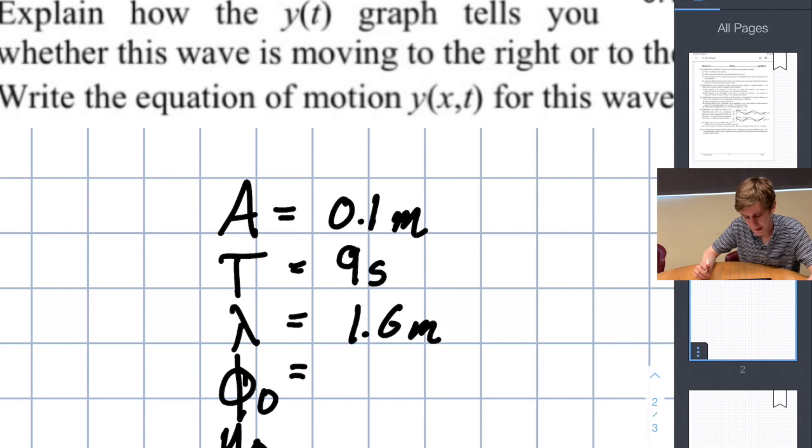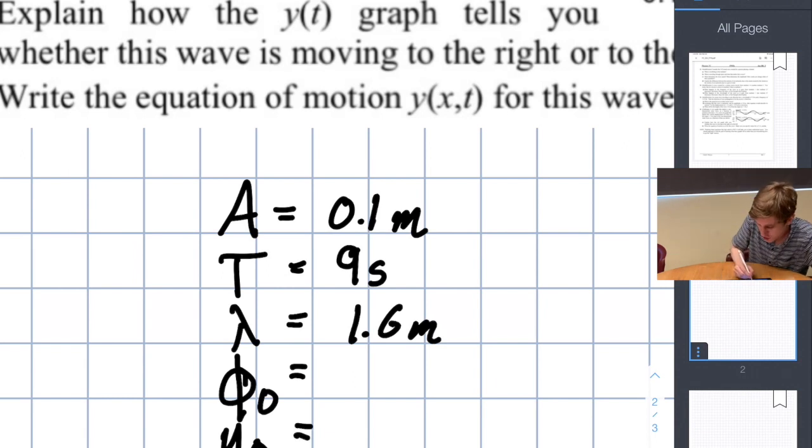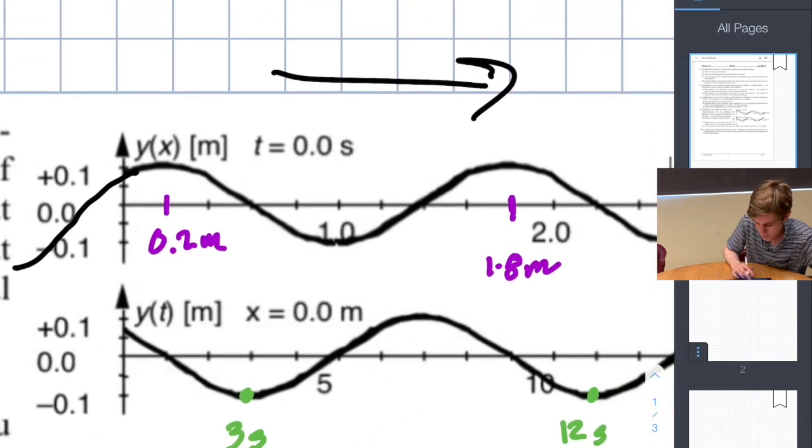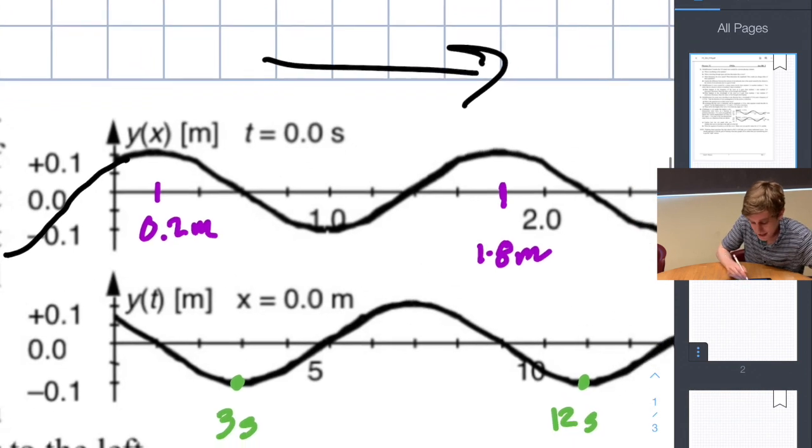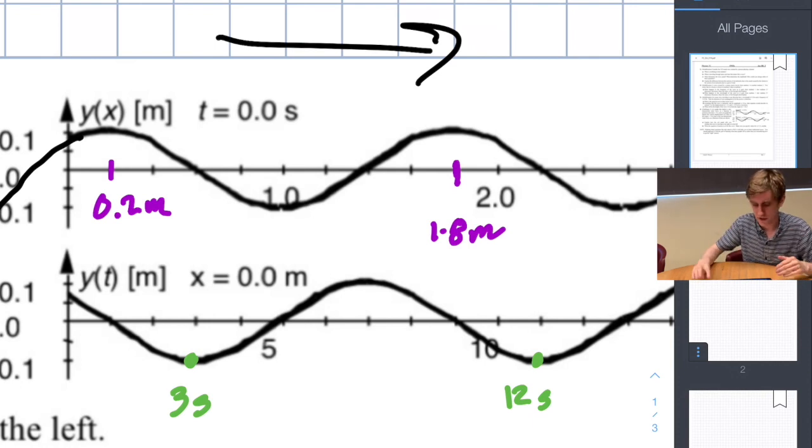We'll come back to the phase constant in a moment. For now, let's just consider the equilibrium. Looking at this graph, it appears to me that the peaks are the same distance from the x-axis as the trough. This just indicates that the equilibrium of the wave is zero. It hasn't been shifted up or shifted down.